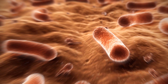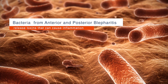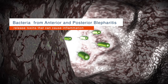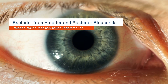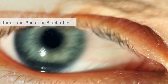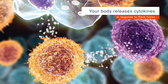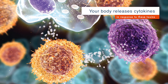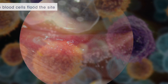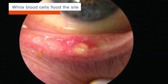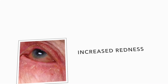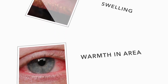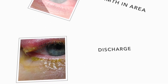Bacteria present in both anterior and posterior blepharitis release toxins that can cause inflammation of the lids and surface of the eye. Your body releases cytokines, which are messenger molecules, in response to these toxins, which results in white blood cells flooding to the site. You would see this as increased redness, swelling, warmth in the surrounding area, and possibly discharge.